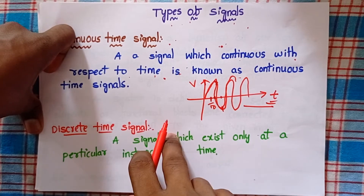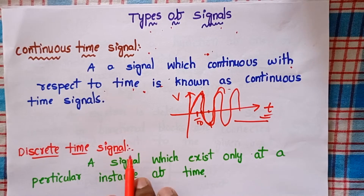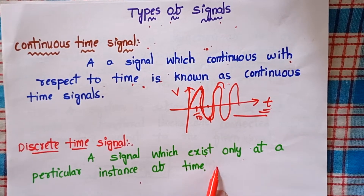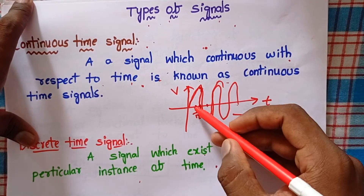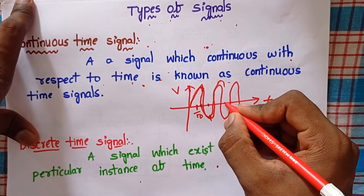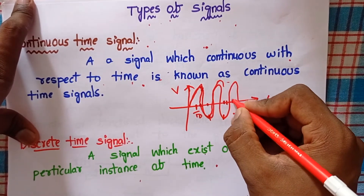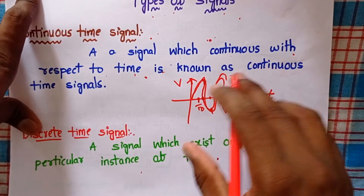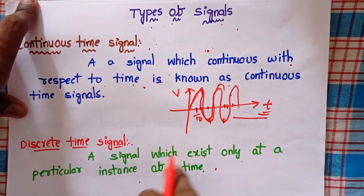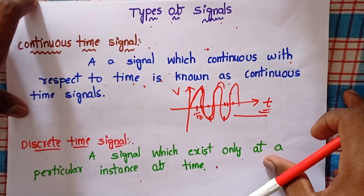Next, let's see discrete time signals. Here is the definition of discrete time signal: a signal which exists only at a particular instance of time. In the continuous time signal, at every instance of time the signal exists — at every time you consider, a signal exists. But in a discrete time signal, the signal does not exist at all instances of time; it only exists at particular instances.